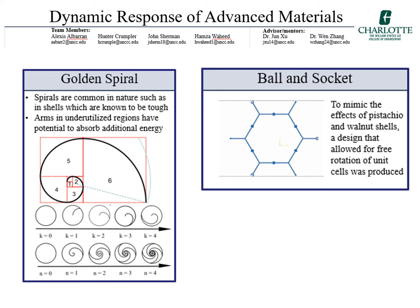The ball and socket was inspired by the unique deformation mechanisms of the microstructure of pistachio and walnut shells. This allows for rotations of groups of cells to absorb energy. This was mimicked by creating hinge-like attachments between each of the puzzle piece objects.